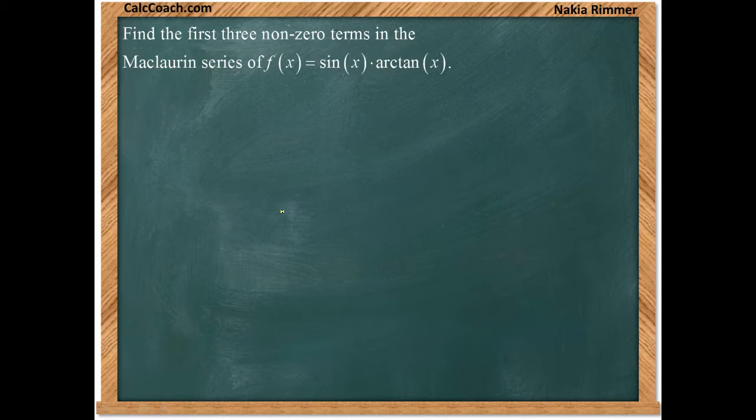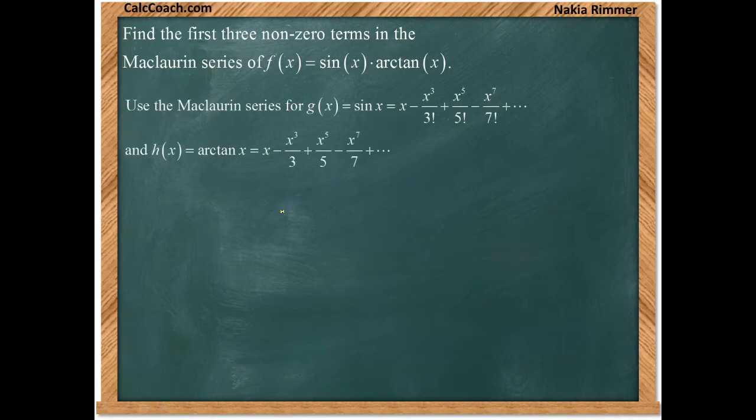So how do we do this? We have to go to our cheat sheet or the table of power series to understand that these are two guys that are on there. Sine of x power series is on there and arctangent of x power series is on there. They only differ by the fact that sine of x has factorials in the denominator and arctangent doesn't. And so we multiply these two functions' power series together.